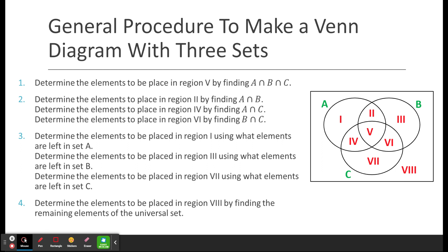So our general procedure to make these diagrams, and you'll have a couple examples like this on the homework to do. First things you're going to do is figure out which ones need to be placed in region V by finding the intersection of A, B, and C. So that's where A, and B, and C all cross over. Then determine the elements to place in region 2 by finding the intersection of A and B, determine elements for region 4 by finding intersections of A and C, and then find the intersection of B and C to put into region 6.